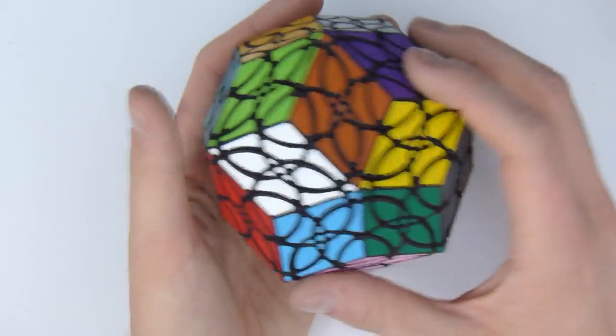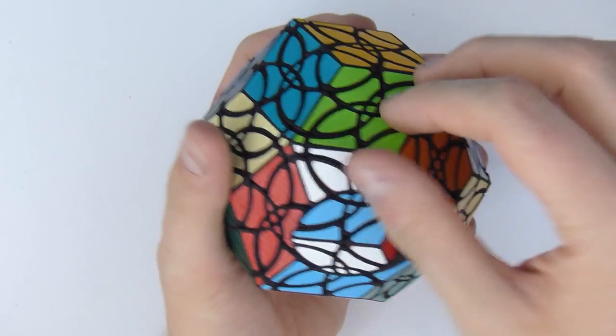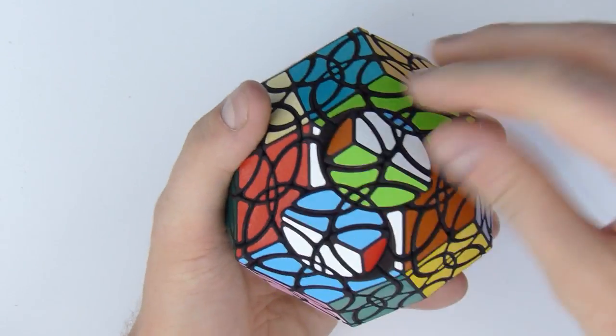So let me show you how it turns. The first type of turn that you can get is this tiny turn right there. So you can get a first jumbling move here.